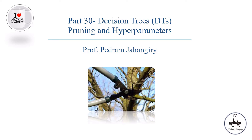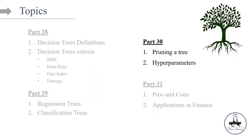In this episode, we'll be going over the concept of what we mean by pruning a tree, and specifically we'll talk about what is the cost complexity pruning method. If you have watched parts 28 and 29, you should have a good understanding of the basic definitions of a decision tree, decision tree criteria, and regression trees versus classification trees. Now let's talk about pruning a tree and how to adjust the hyperparameters.